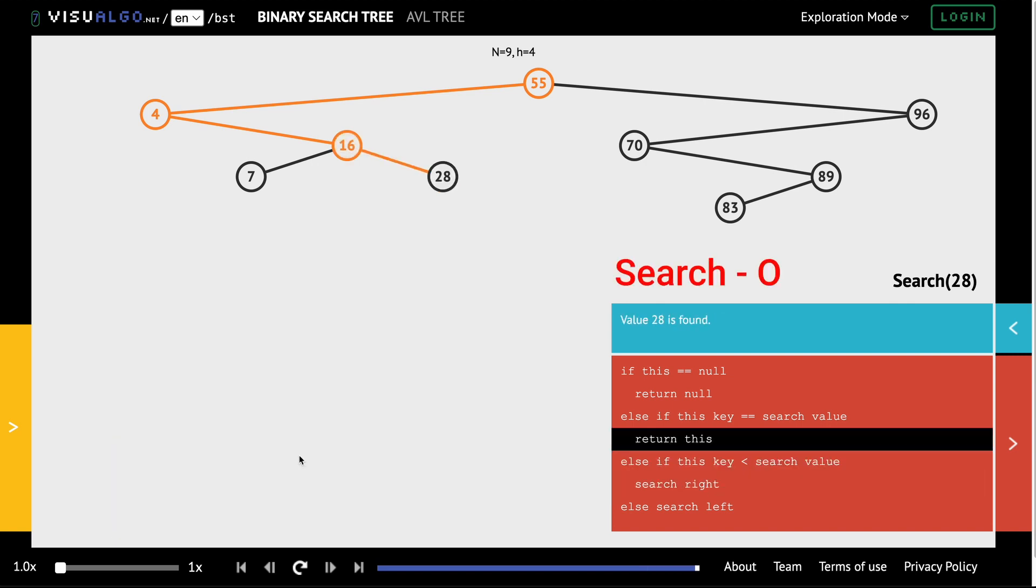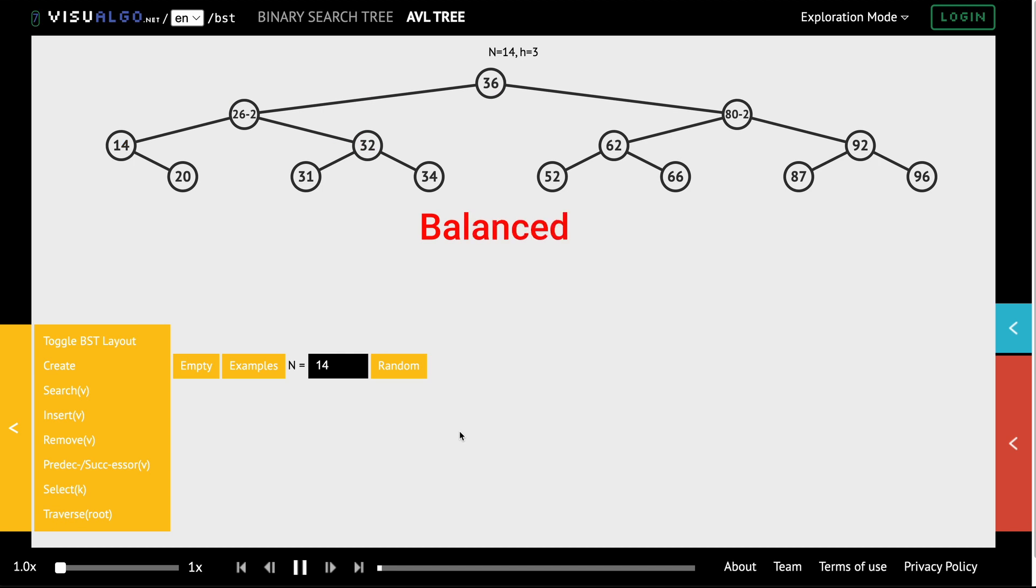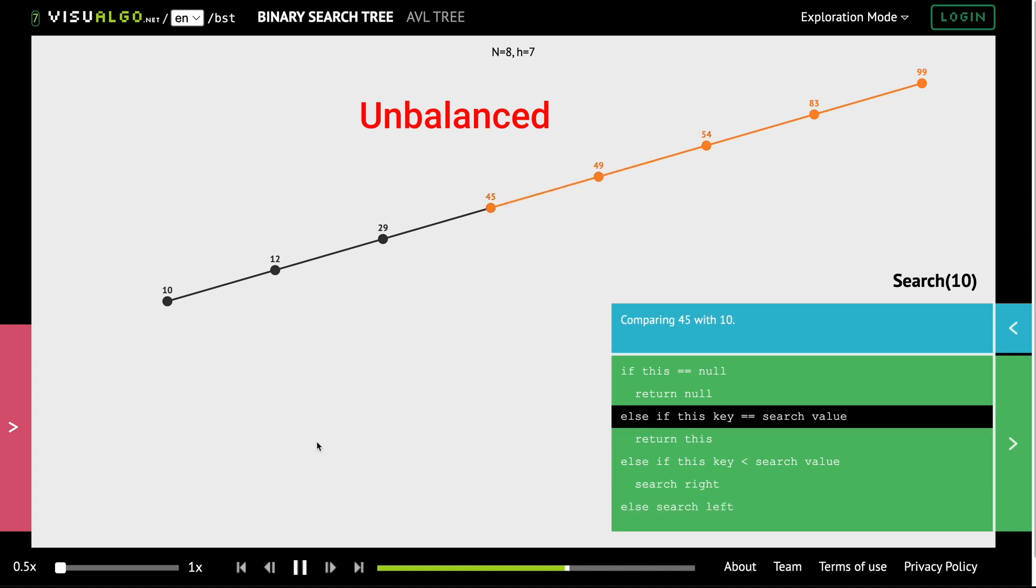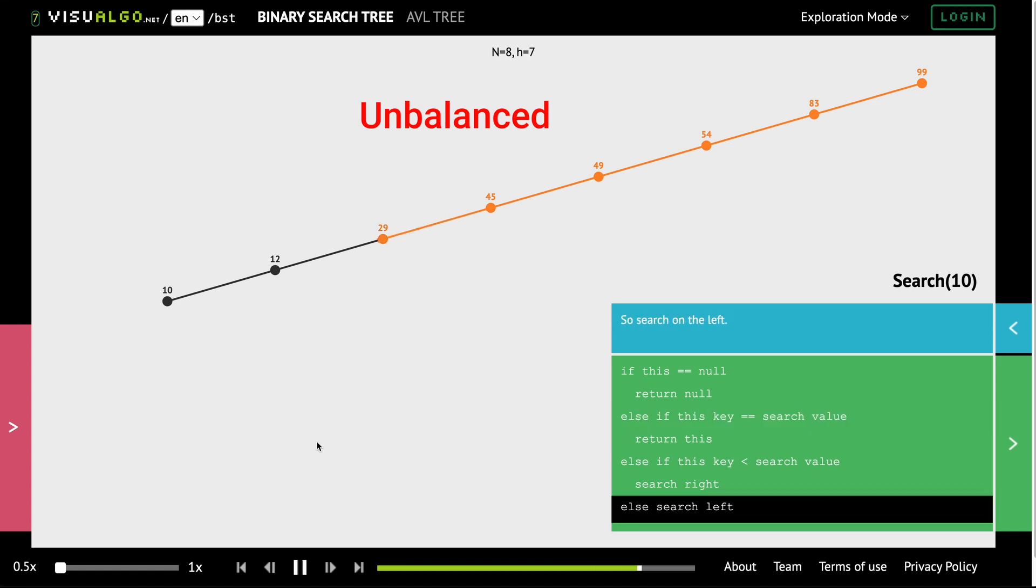But it can be O of n for unbalanced trees in the worst case. The tree is called balanced when the height of the left and right sub-trees of any node differ by no more than one. And an unbalanced tree is where the left and right parts of the tree are not always equal. And it can even become a linked list where searching for an item is O of n because we have to traverse to each item to find our target value.